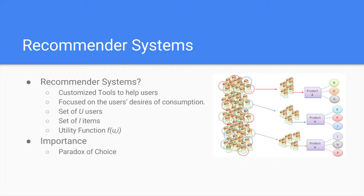What are recommender systems? Recommender systems are tools that help users in selecting what they want to consume next, based on their tastes and interests. These systems use the user's consumption information to issue recommendations, applying a utility function for each item and user, and ranking the most useful items. They are very important due to a known problem called the paradox of choice — the more items in a catalog, the more undecided the user gets. Therefore, recommender systems help users select what to consume based on their profile.